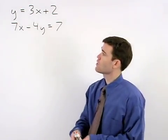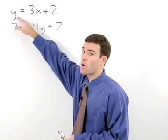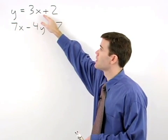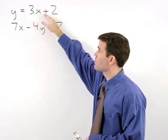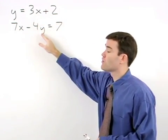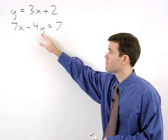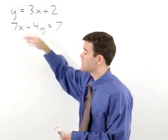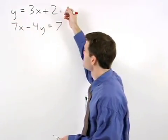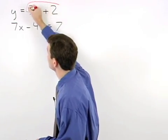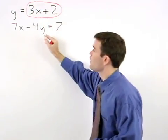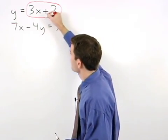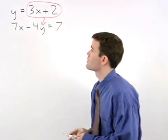Since our first equation tells us that y equals 3x plus 2, we can substitute a 3x plus 2 in for the y in our second equation. In other words, since y means the same thing as 3x plus 2, we can replace the y in the second equation with a 3x plus 2.